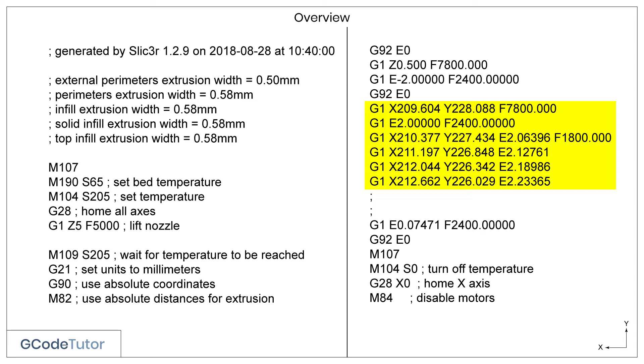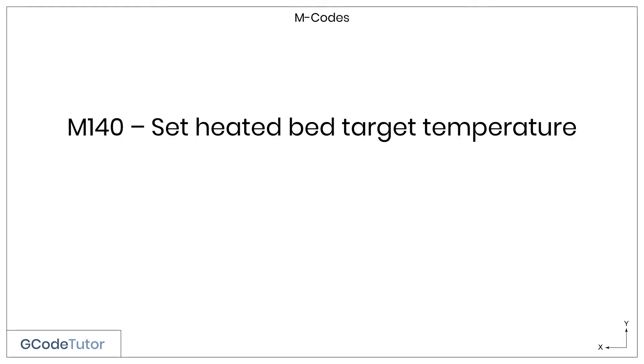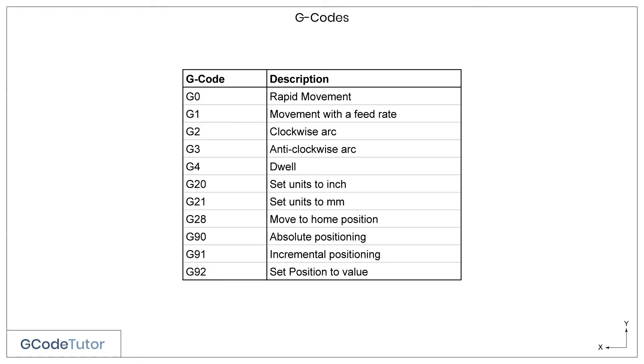It's important when problem-solving your printer. Say, for example, the heated bed doesn't heat up. Now, is it something wrong with your printer, or did the program simply not turn it on? Having an understanding of G-code, we can tell what's wrong at a glance by looking at the program.